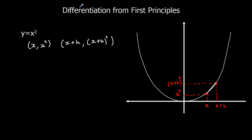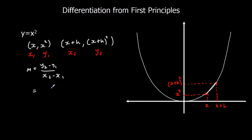So we're going to have x1, y1 and x2, y2. The gradient is the change in y over the change in x. So in this case the gradient is y2, which is (x+h)², minus y1, which is x², over x2, which is x+h, minus x1, which is x.